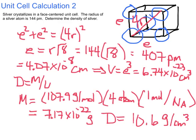That number makes some sense. I bet if I looked up the density of silver on Wikipedia, I bet I get a number that's darn close to 10.6. So here's another example of a unit cell calculation.